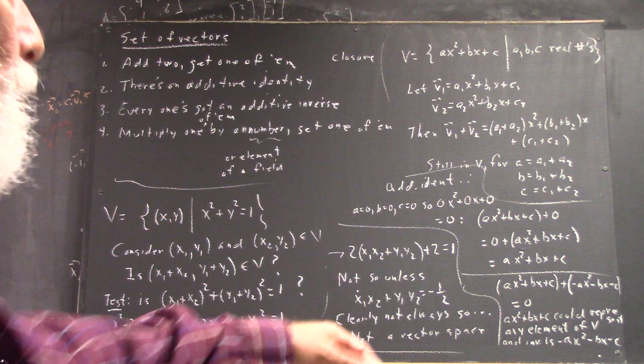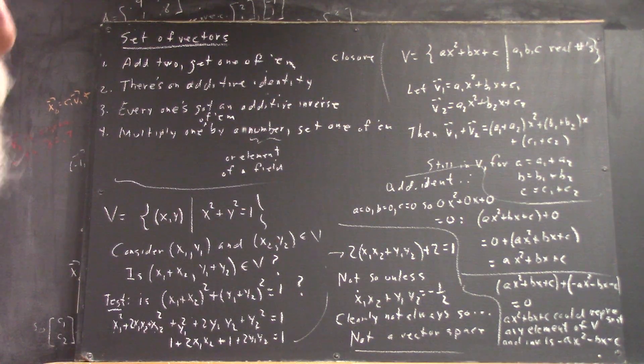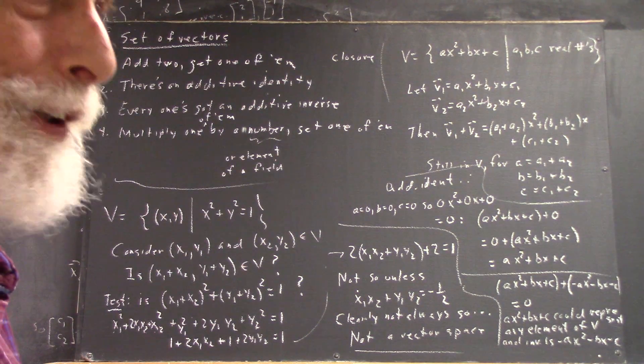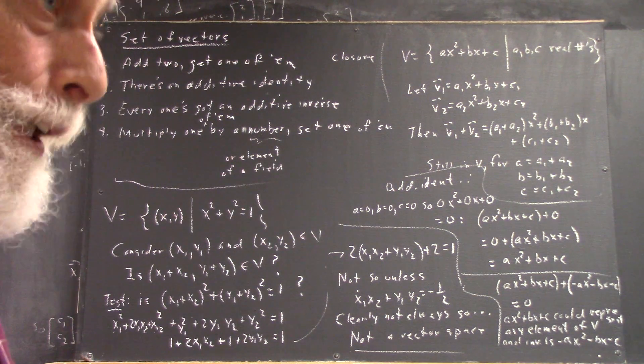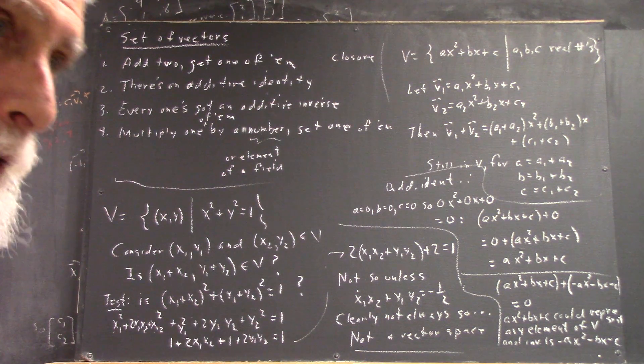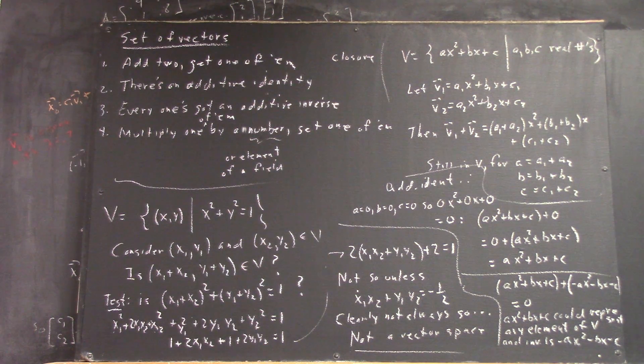And then, of course, you've got to argue that that's also in the set. Well, clearly if A, B, and C are real numbers, so are negative A, negative B, and negative C. So it is a member of the set that is inverse to the original.